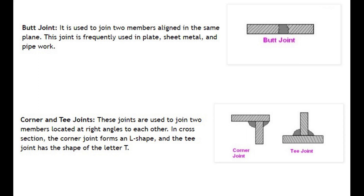Corner and T Joints: These joints are used to join two members located at right angles to each other. In cross section, the corner joint forms an L shape, and the T joint has the shape of the letter T.